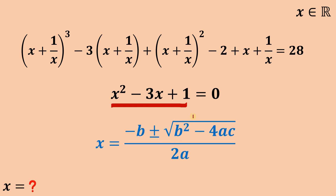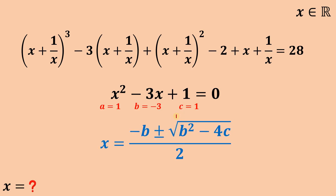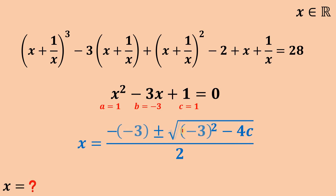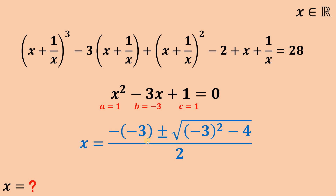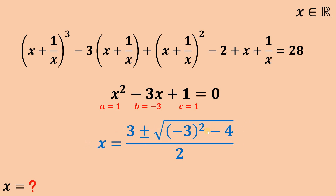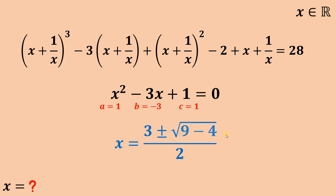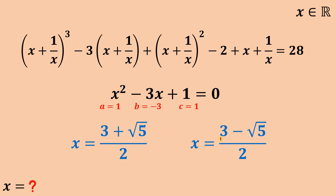Using the quadratic formula — negative b plus or minus the square root of b squared minus 4ac, all over 2a — where a equals 1, b equals negative 3, and c equals positive 1: negative of negative 3 is positive 3, negative 3 squared is positive 9, and 9 minus 4 is 5. So we find two real values of x: x equals 3 plus square root of 5 over 2, or x equals 3 minus square root of 5 all over 2.